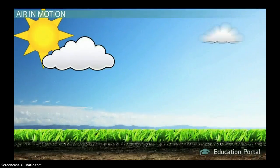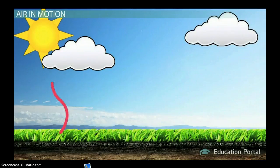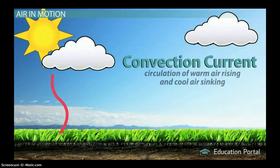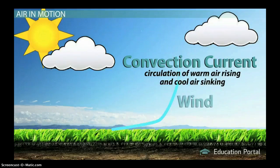The same thing happens with air in the atmosphere. As warm air rises, it expands and cools. It then sinks back down to fill the space the warm air left behind. This convection current or circulation of warm air rising and cool air sinking has some interesting effects on wind.